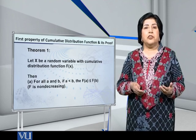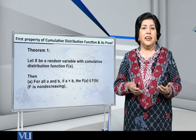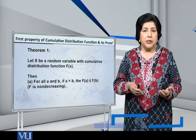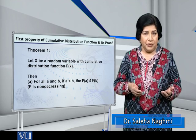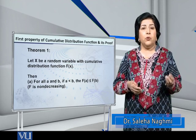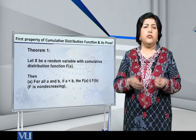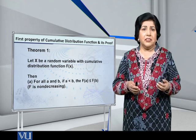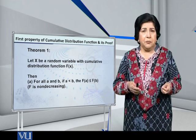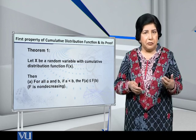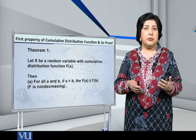The first property of the cumulative distribution function says that if X is a random variable with CDF capital F of small x, then for all A and B—any two numbers A and B on the real line—if A is less than B, then capital F of A is less than or equal to capital F of B.